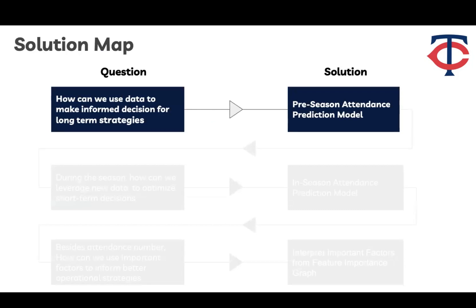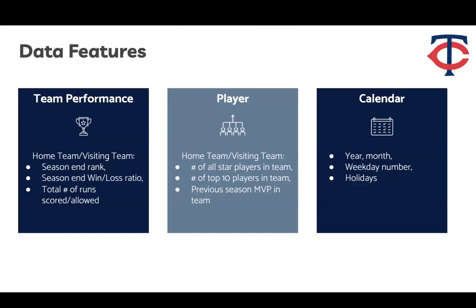Now let's go through the pre-season attendance prediction model. Thinking in a sports fan's shoes helps us target which factors are good candidates for prediction, since fans decide whether to attend based on those factors. We categorize features into three major groups: team performance — including season rank, win-loss ratio, and total runs scored for home and visiting teams; players — including number of all-star players, top-10 players, and whether there's a previous season MVP; and calendar — including year, month, weekday, and holidays.